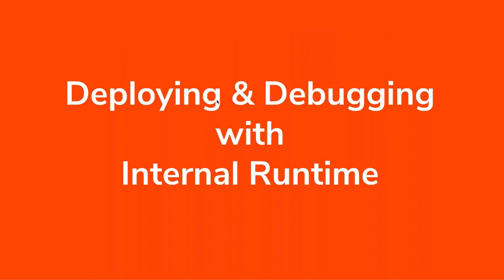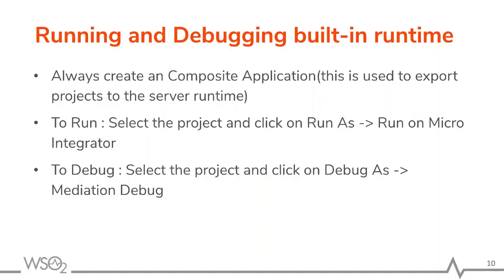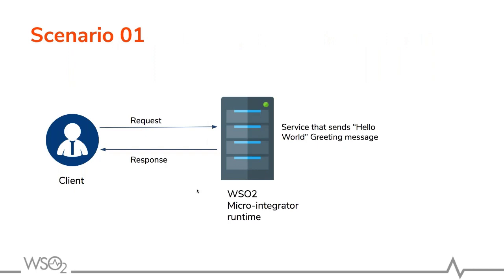Now we'll try to deploy and debug with the internal runtime. You always need to create a composite application, then right-click on it, select Run As and Run on Micro Integrator. To debug, select Debug at Mediation Flow. In this scenario, a client sends a request to WSO2 Micro Integrator runtime, then the micro integrator sends a hello world message back to the client as a response.